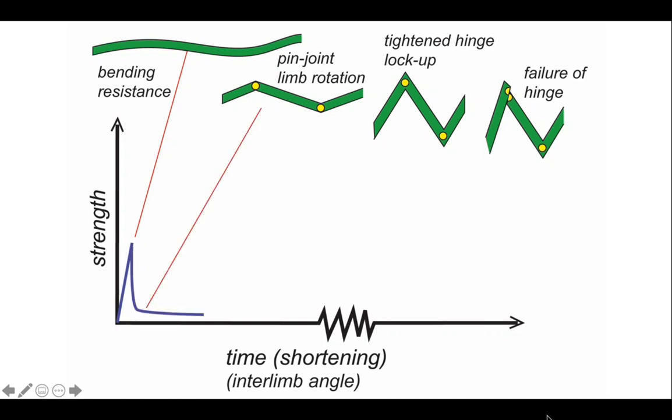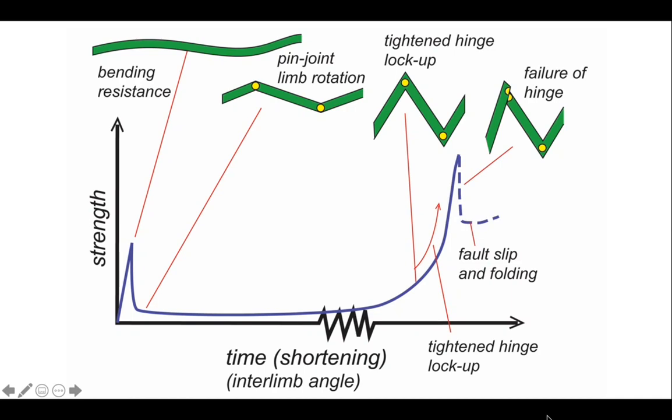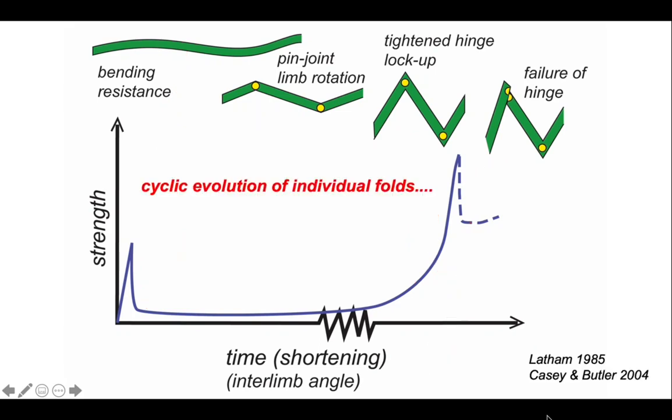But when the rock begins to fold, it moves to a pin-joint limb rotation mechanism. So at this stage, the deformation can progress very easily by rotation of the limbs. So the strength drops. But through time, it gradually increases as the folds tighten to lock up. But in nature, often the deformation doesn't end there. The limbs break. So you have slip in the hinge areas, which allows deformation and limb rotation to progress a little bit further.